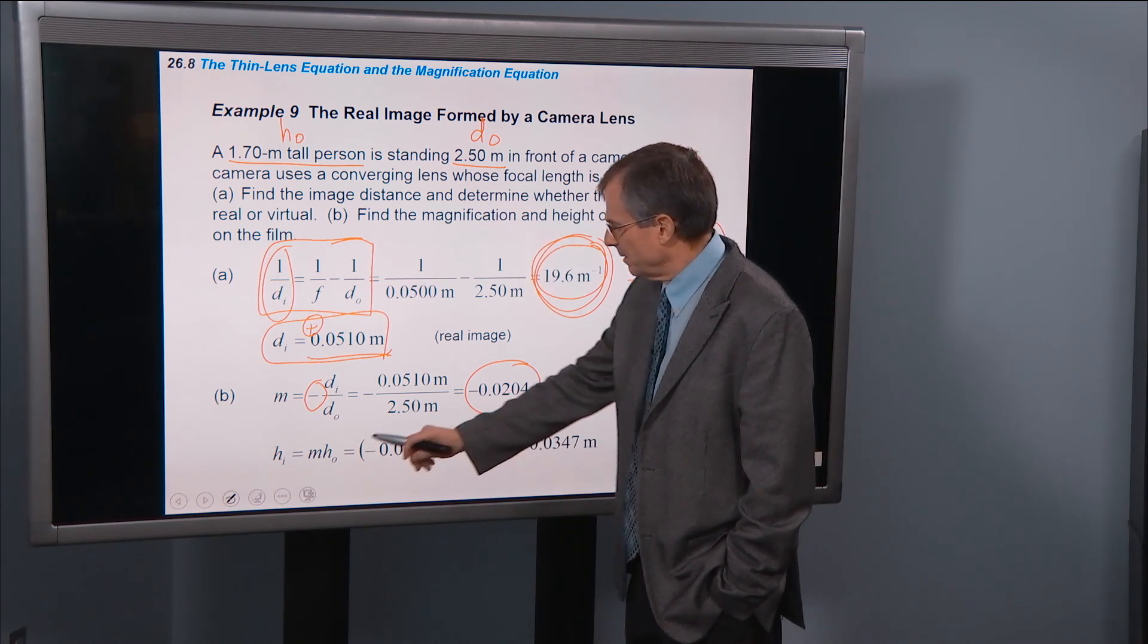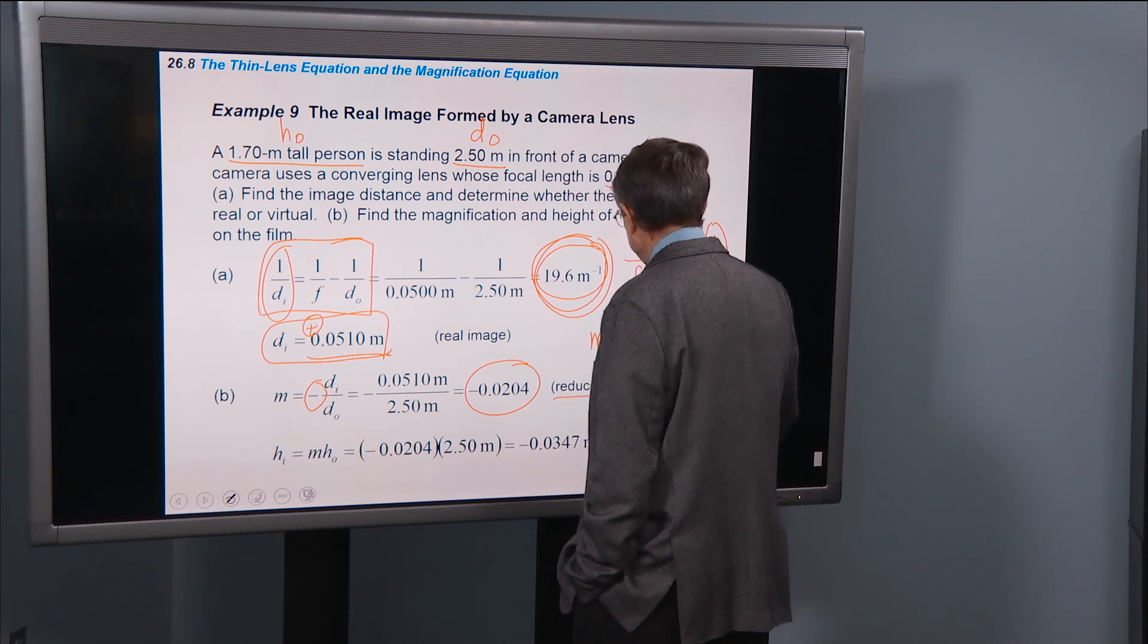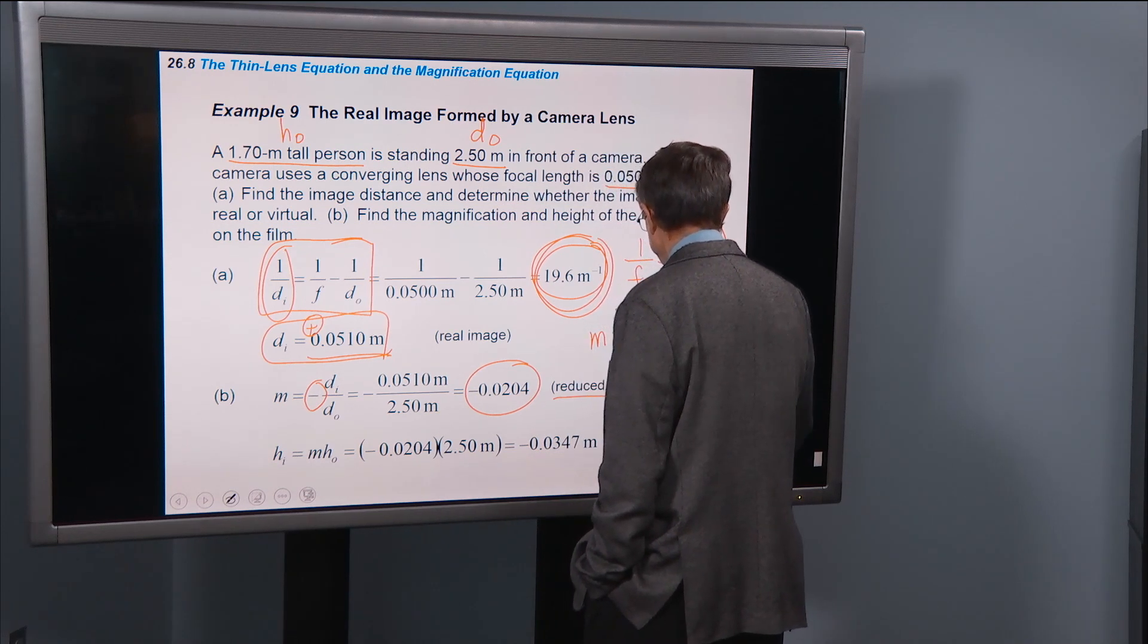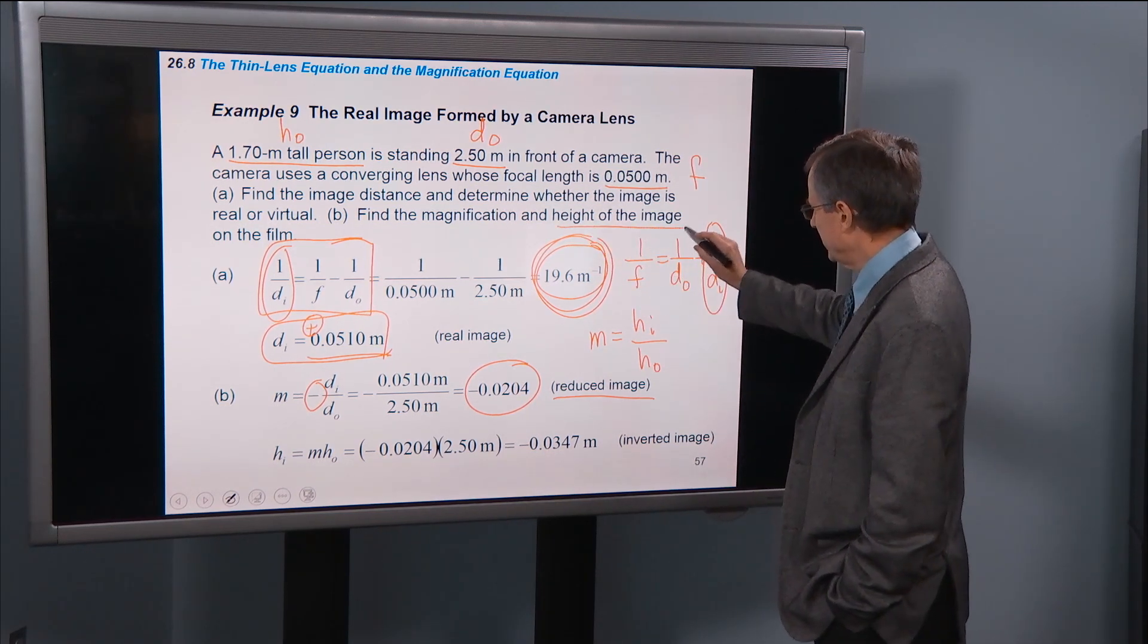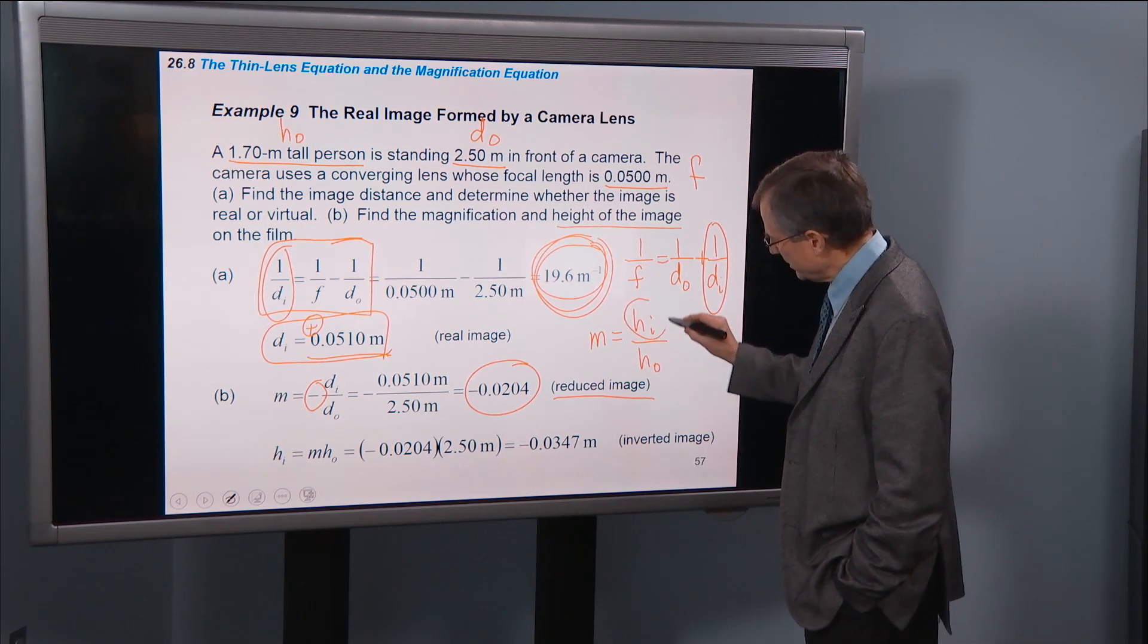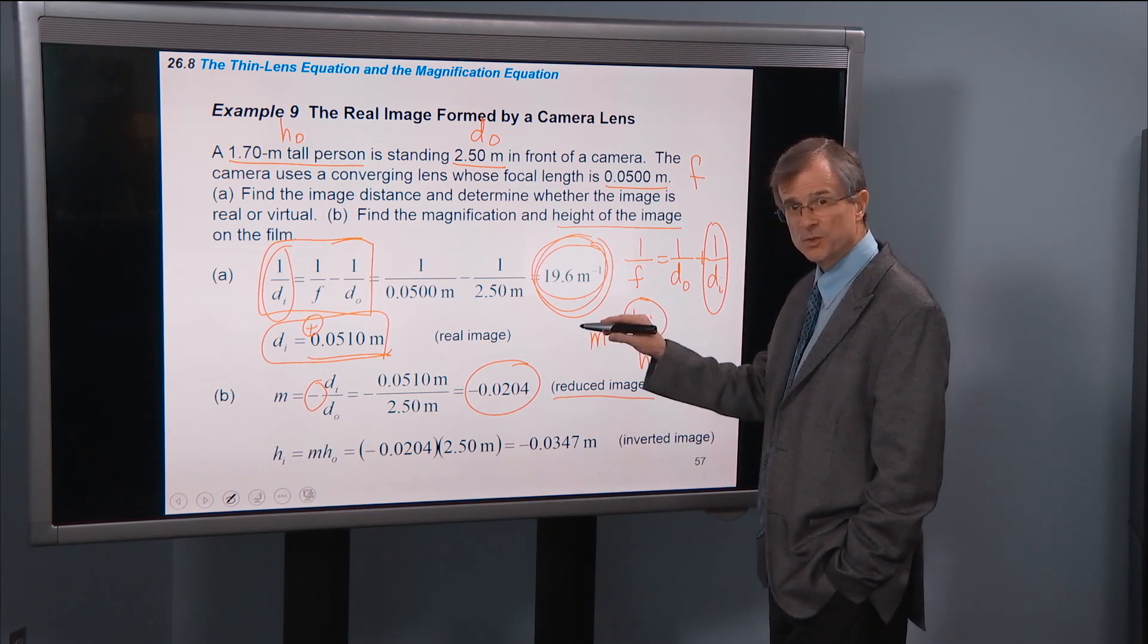And then we also know that the magnification is Hi over H0. So we're actually interested in the height of the image. So we can solve this equation for the height of the image by multiplying both sides by H0.